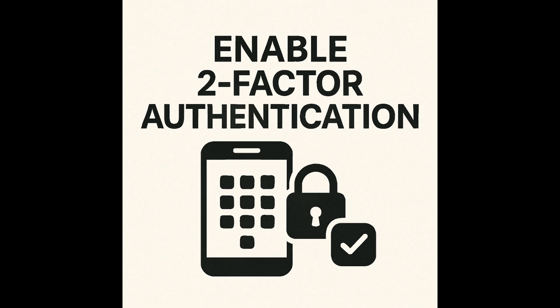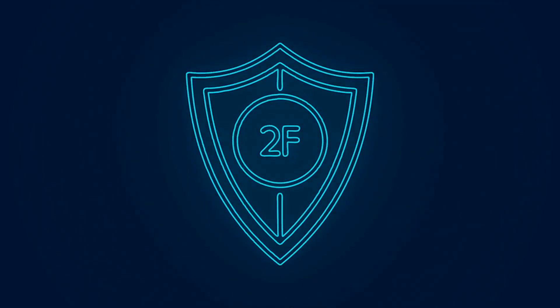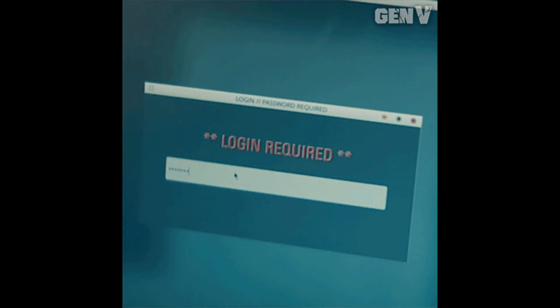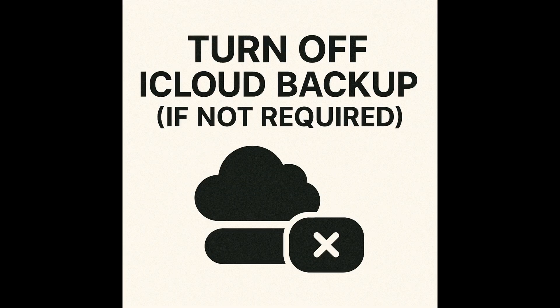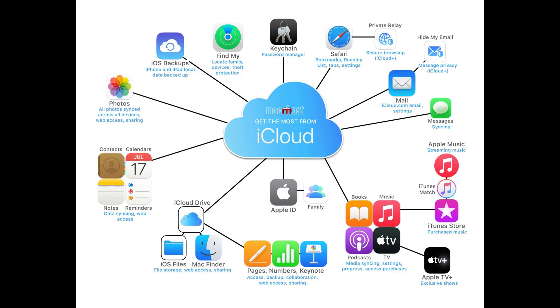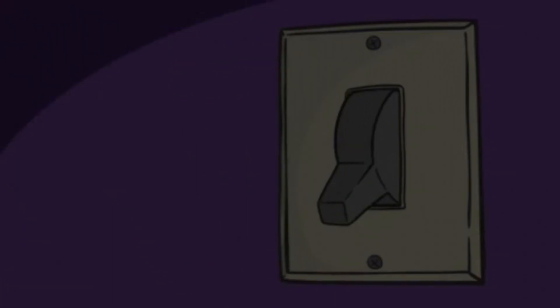Enable two-factor authentication. 2FA adds an extra layer of security to your Apple ID — even if someone has your password, they won't be able to log in without a verification code sent to your trusted device. Turn off iCloud backup if you don't use it; many spyware tools work by pulling data from your iCloud backups, so if you don't actively use this feature, it's safer to turn it off.